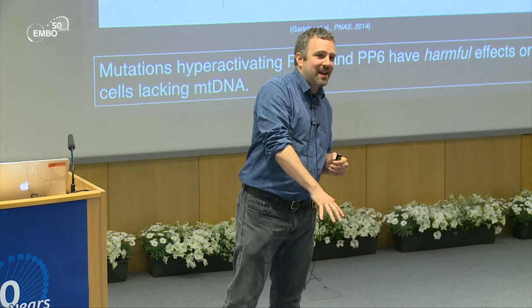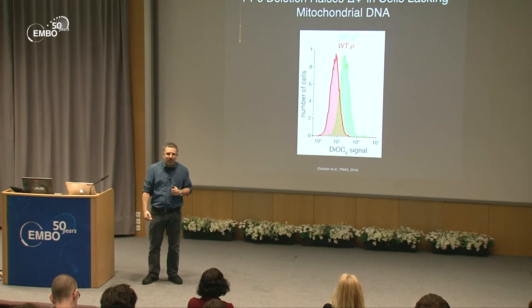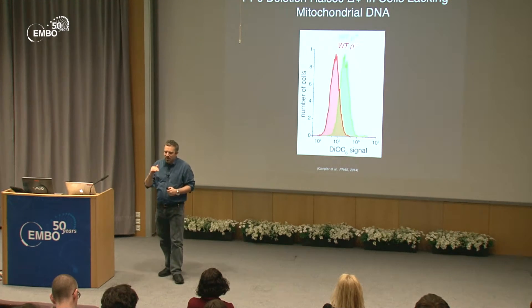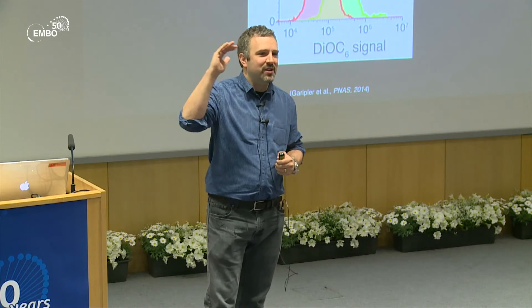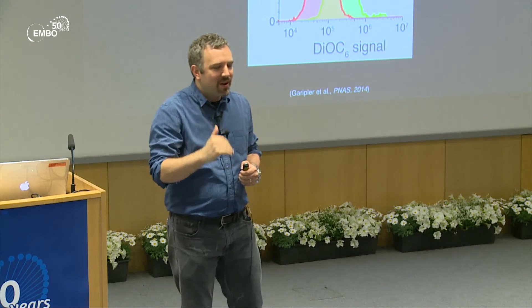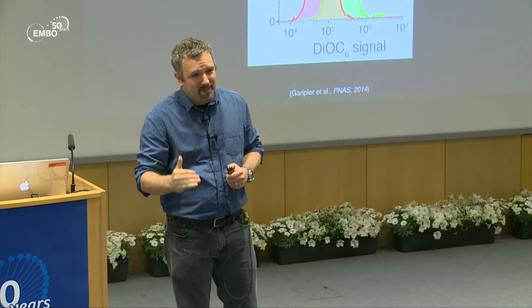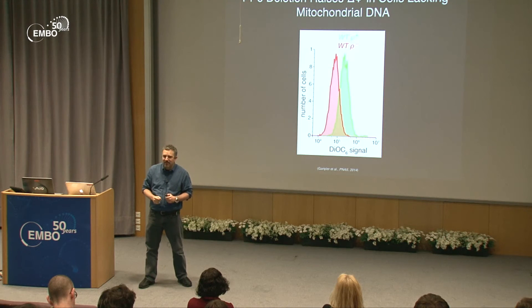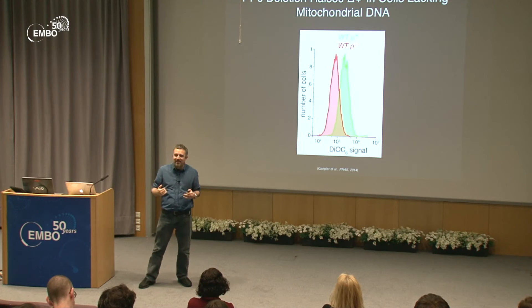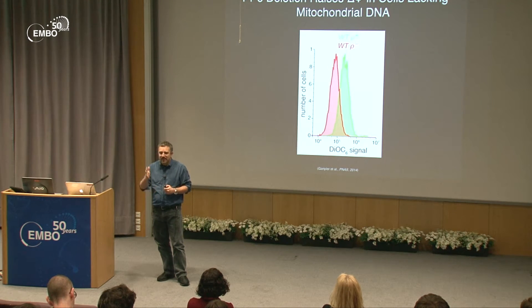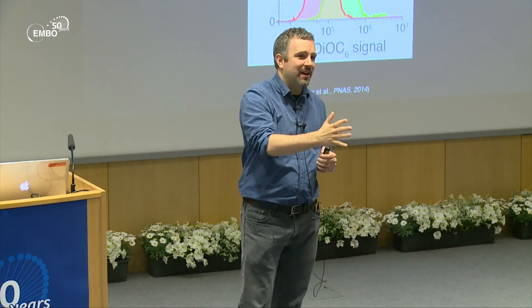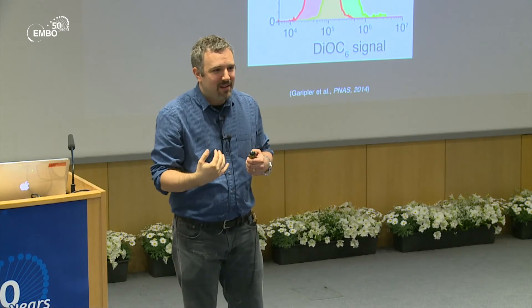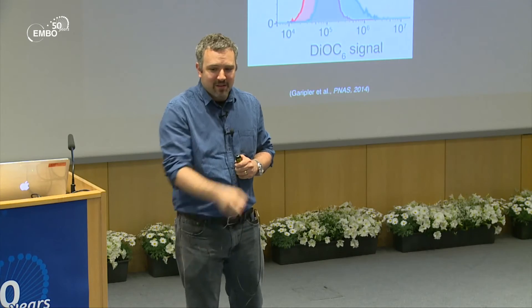What is the mechanism? When you have mitochondrial DNA, you have an electron transport chain, proton pumping, and high membrane potential. Without mitochondrial DNA, that potential drops and is set up differently. Using a potential-dependent dye and flow cytometry, rho-plus cells show higher mitochondrial accumulation of the dye than rho-minus cells. In Sit4 or protein phosphatase 6 mutants lacking mitochondrial DNA, the potential shifts back toward normal.